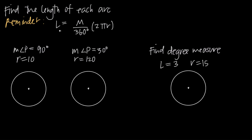We're going to be using this formula to find the length of an arc, where L is the length of the arc, M is the interior angle measure associated with the arc, and then we have this multiplied by 2πr, where r is the radius of the circle.